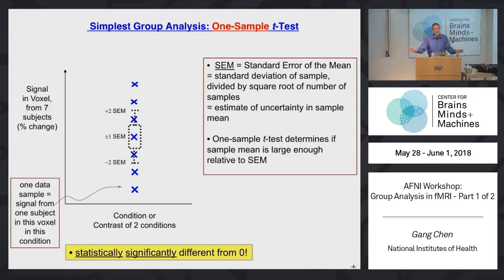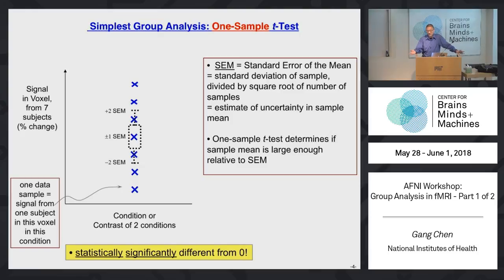When we do group analysis, suppose we have seven subjects and focus on one voxel. At the group level, we want to say something about the centrality — the average of those seven subjects. When we have seven numbers, we can describe them in a couple of ways. First, the mean, which captures centrality. Second, the standard deviation, which shows how spread out those numbers are — the reliability of that mean. Combining those two gives the t-statistic: mean divided by the standard error of the mean.